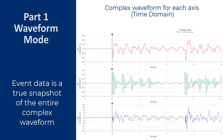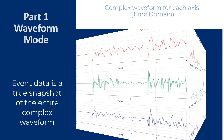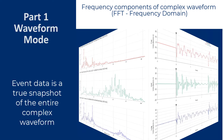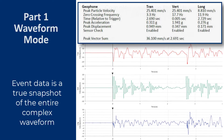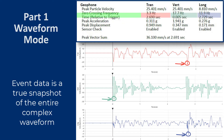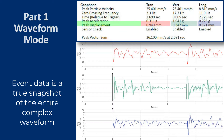It is important to note that when recording in Waveform mode, the collected event data is a true snapshot of the entire complex waveform. This means you can perform a fast Fourier transform on the waveform to reveal its individual frequency components. From the time domain waveform graphs, we can see the peak particle velocity for each of the transverse, vertical, and longitudinal axes, the associated zero-crossing frequency when it occurred relative to the trigger, the peak acceleration, and the peak displacement.